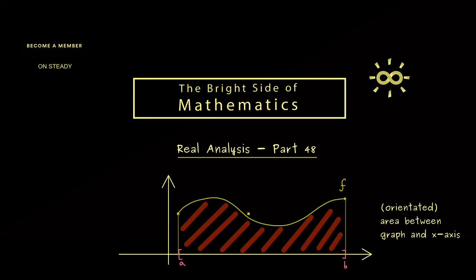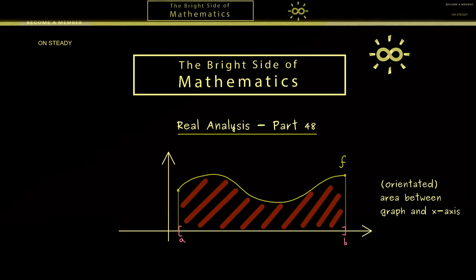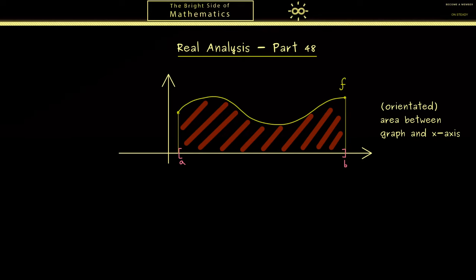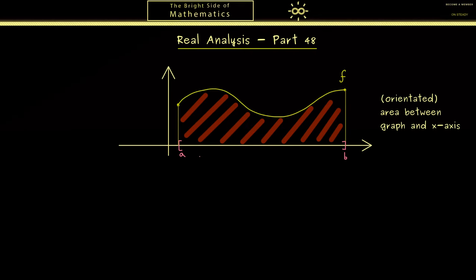But then the question is, how can we calculate this area? Now I can already tell you the overall idea is that we approximate it with rectangles. Indeed, the procedure for the Riemann integral is that one chooses points on the x-axis and then draws rectangles above them.